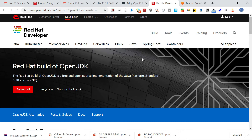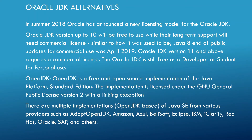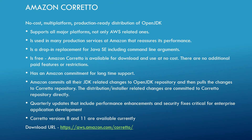My personal favorite OpenJDK distribution is Amazon Corretto. Let us see more detail on that. Amazon Corretto is a no-cost, multi-platform, production-ready distribution of OpenJDK, and it is an implementation of the OpenJDK standard.